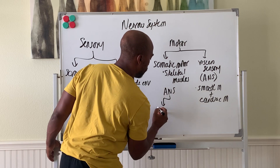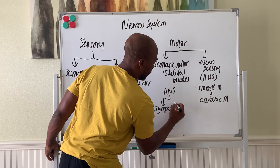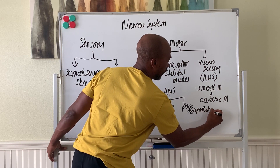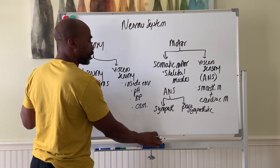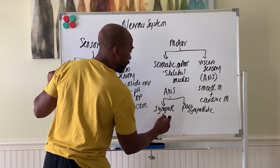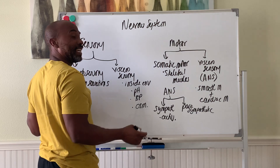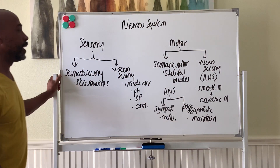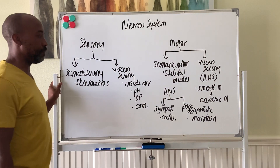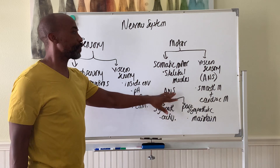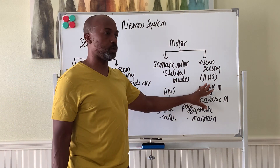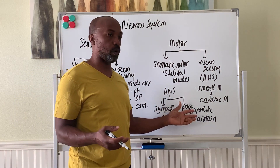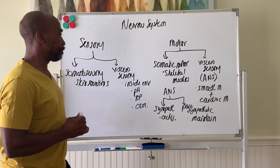The ANS division has two subdivisions: your sympathetic division and your parasympathetic division. The sympathetic division gears the body up for emergencies or activities — also called fight or flight. The parasympathetic is more involved in maintenance of the body, to maintain your basal levels — also called rest and digest. We'll cover the ANS in more detail later in the lecture series.